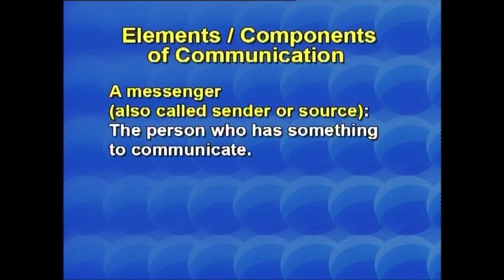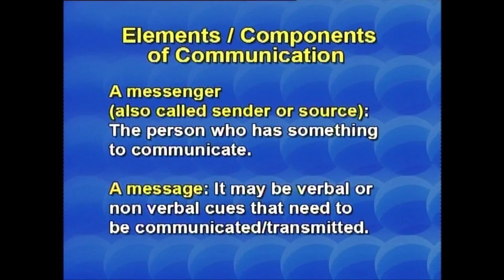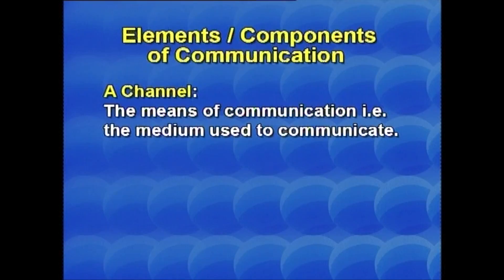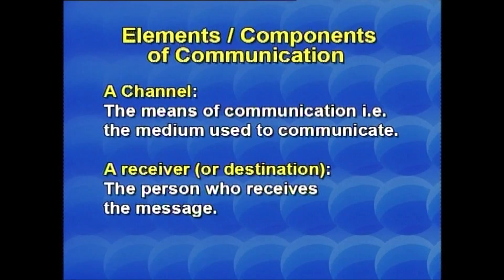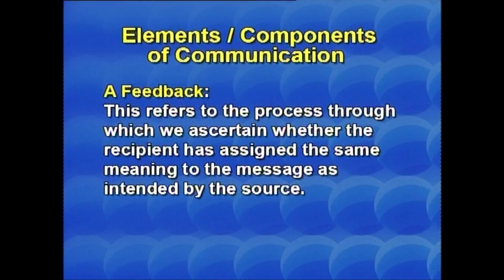First is the messenger — the sender or source, the person who has something to communicate. Second is the message — a verbal or non-verbal cue that needs to be transmitted. Third is the channel — the means or medium used in order to communicate. Fourth is the receiver — the person who receives the information. Additionally, feedback is an important aspect of communication: it is the process through which we ascertain whether the recipient has assigned the same meaning to the message that was sent by the source.